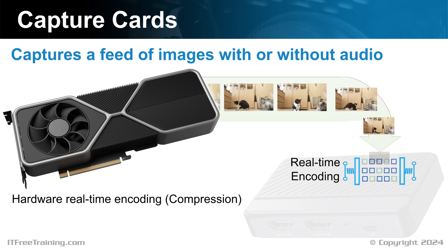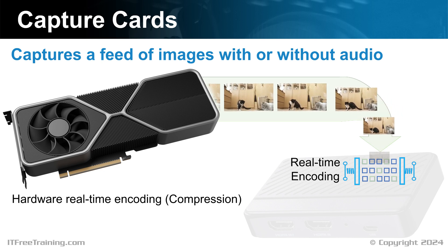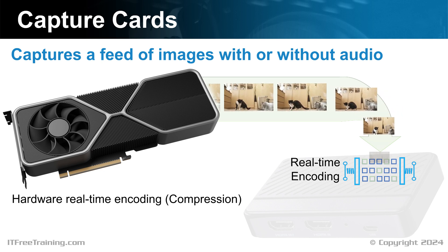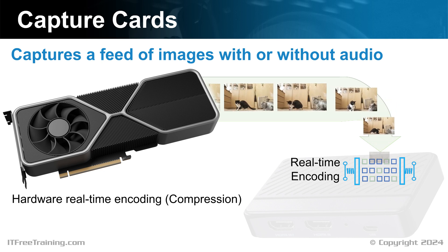Real-time means the capture card needs to output compressed data at the same speed as it is receiving data. Since the compression is done in real-time, the output file tends to be larger than if you don't use a real-time compressor. Generally, hardware is excellent at compressing video in real-time over what a CPU can achieve, however it is still limited. You can only achieve so much if you want to maintain real-time compression. The amount of video frames you receive must match the number you output; otherwise, the capture card will start dropping frames, which will cause the video to look glitchy on playback.